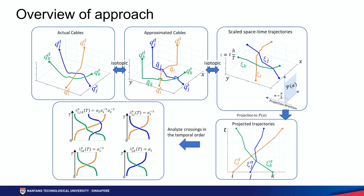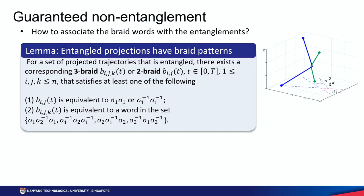If we have a projection plane and project those trajectories onto it, we can analyze the crossings among those projected trajectories and eventually obtain braid representations specific to this projection, as shown in the bottom row. So how are braids useful for identifying entanglements? Our key finding, as written in the lemma, is that we can always identify entanglements by looking for specific patterns in the braid representations of the projected trajectories.